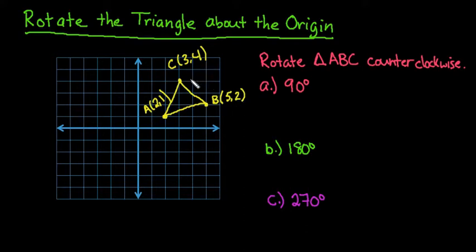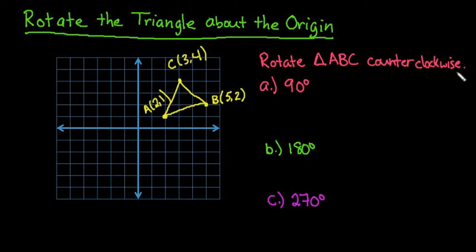For this particular video, I am going to rotate my triangle counterclockwise by these three angle measures: 90, 180, and 270. In geometry, these are the most common rotations that you will encounter, and the majority of the time we will rotate counterclockwise unless it specifies clockwise. So if it doesn't specify the direction, then rotate counterclockwise.